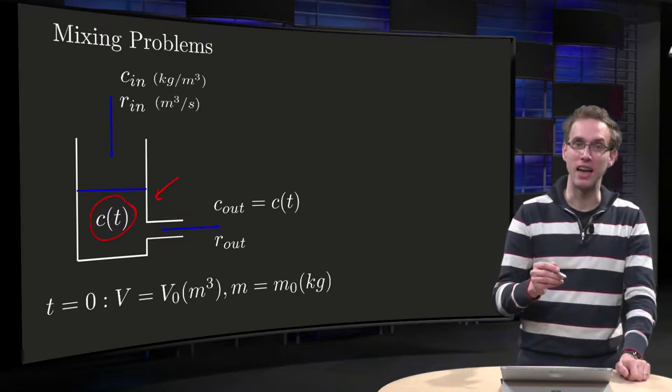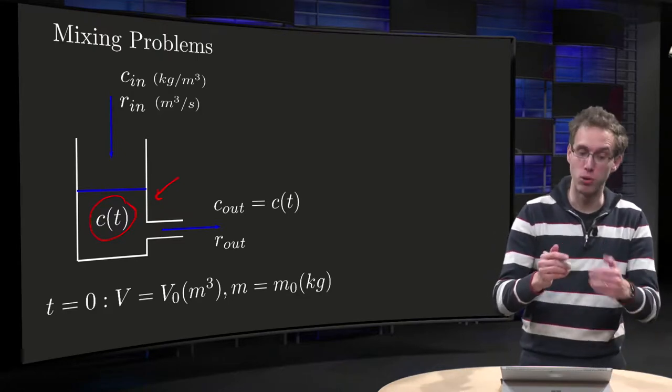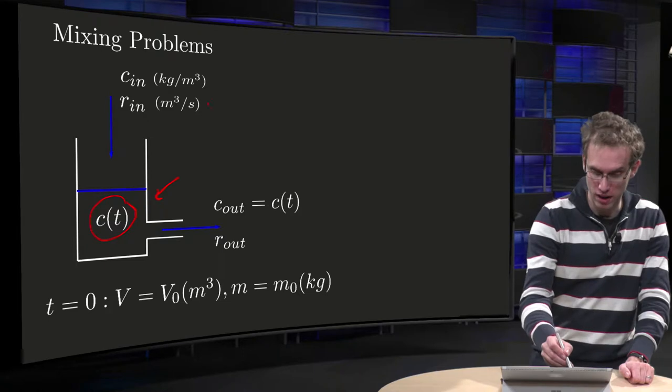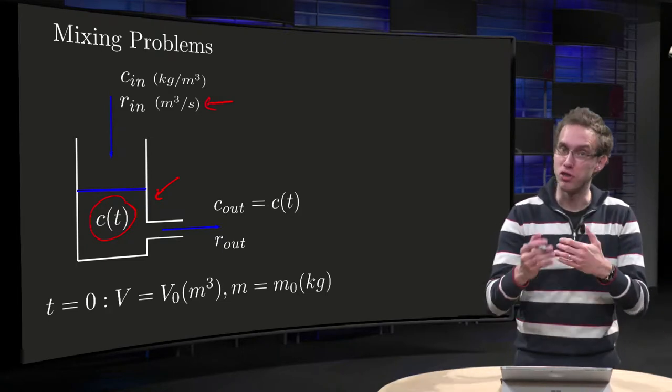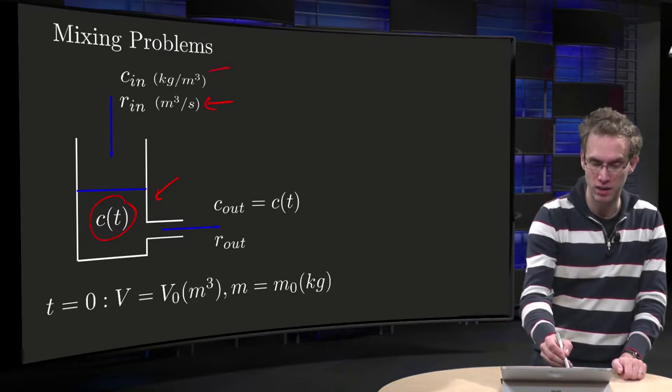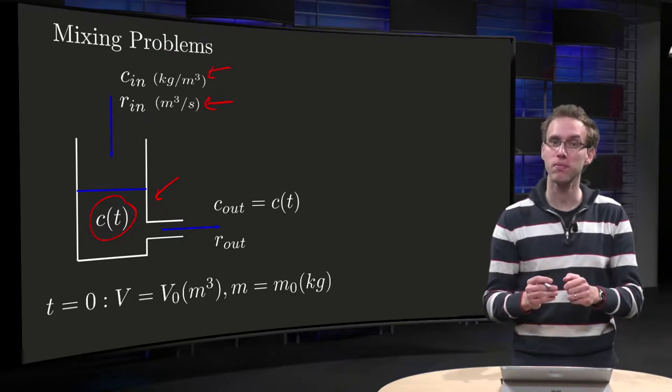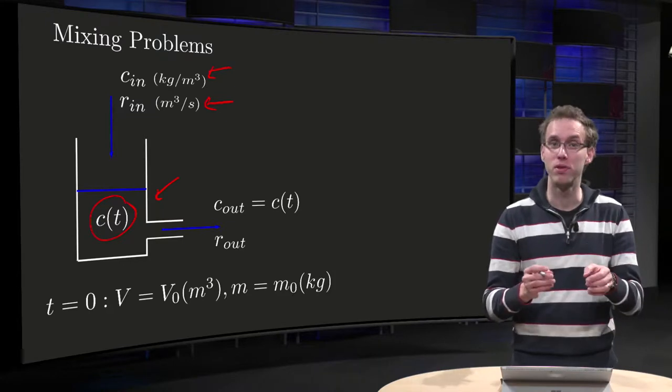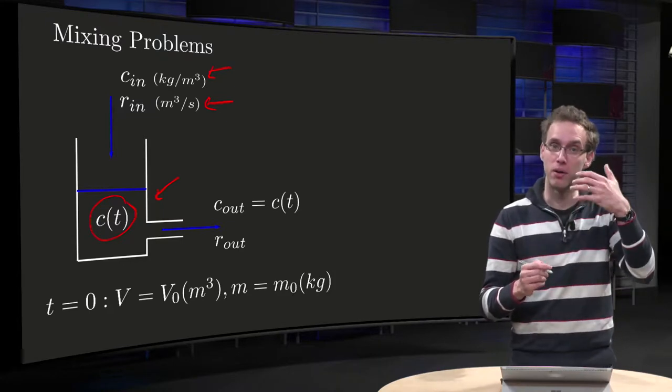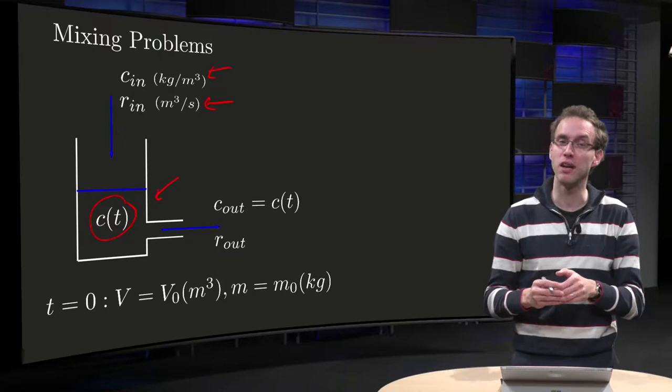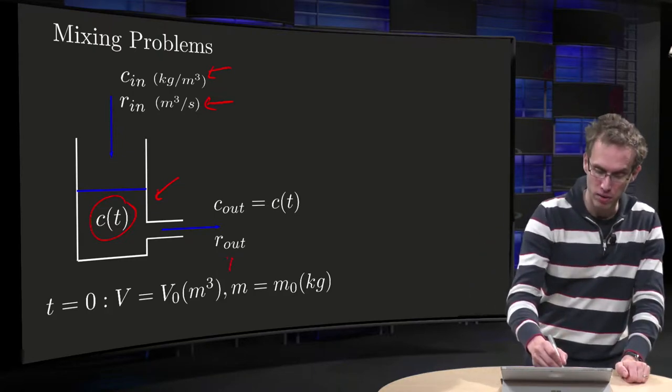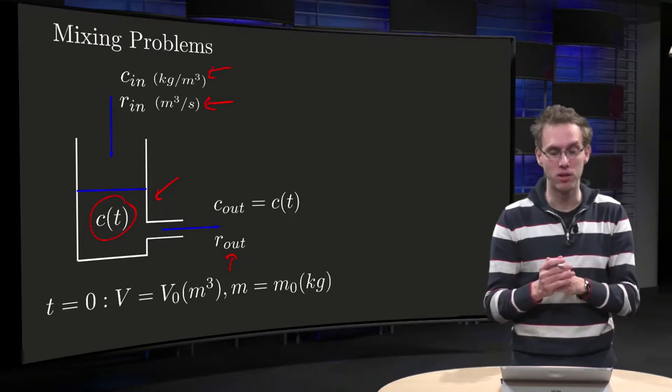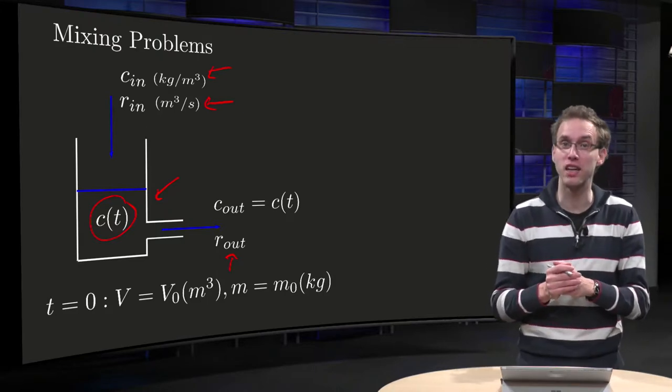What do we do then? Well, we add some solution at a rate r_in, in meter cube per second, with some concentration of salt, c_in, in kilograms per cube meter. And at the same time, we do not only increase the volume in the tank, but we also have an outlet with some rate out, of course in meter cube per second as well.